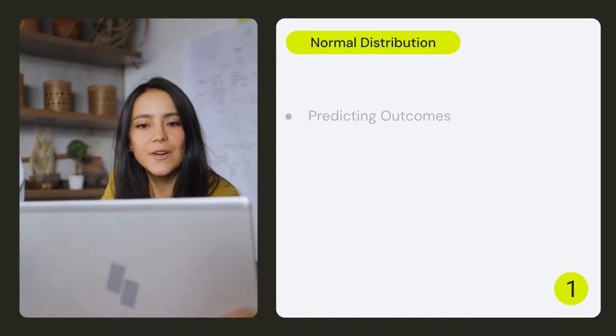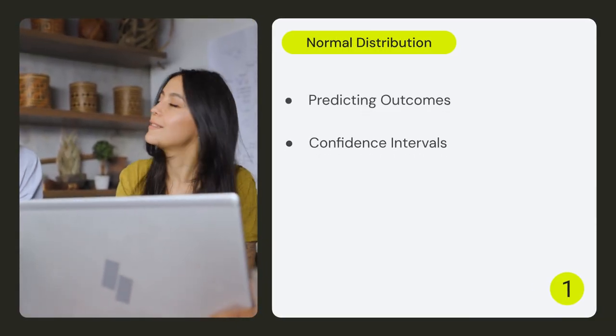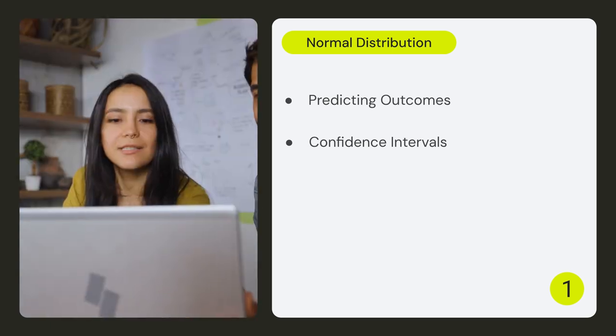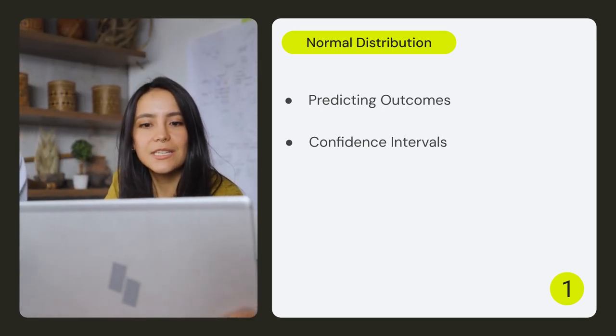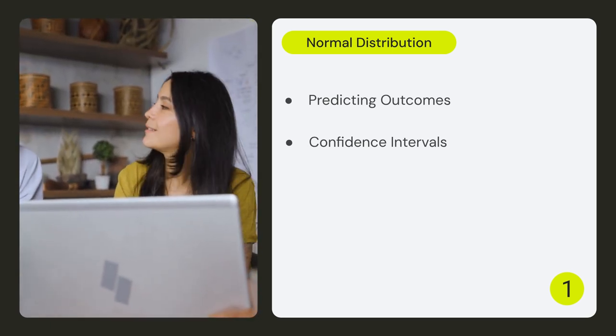In finance, returns are often assumed to follow a normal distribution. This allows us to calculate confidence intervals, giving us an estimate of where future returns might fall.